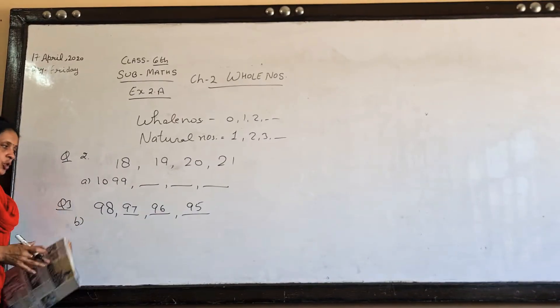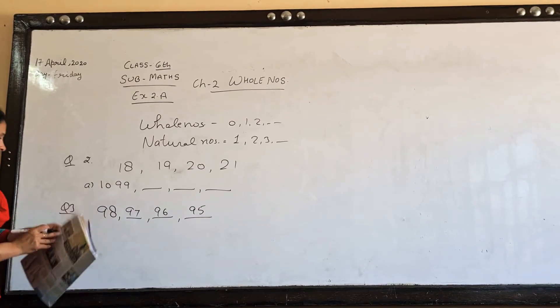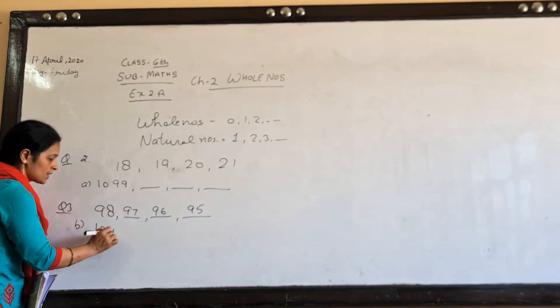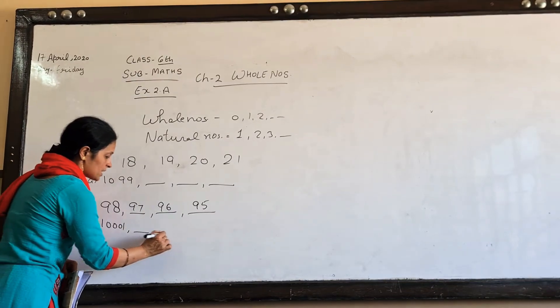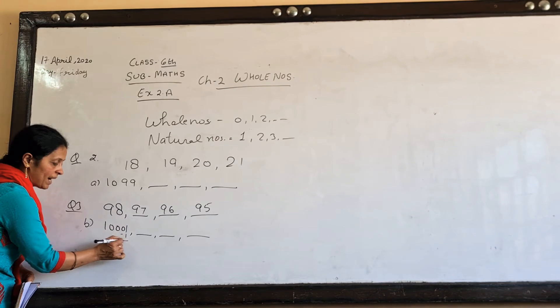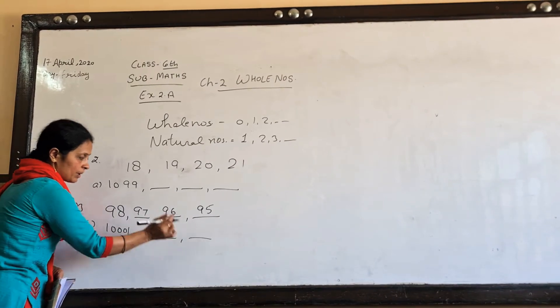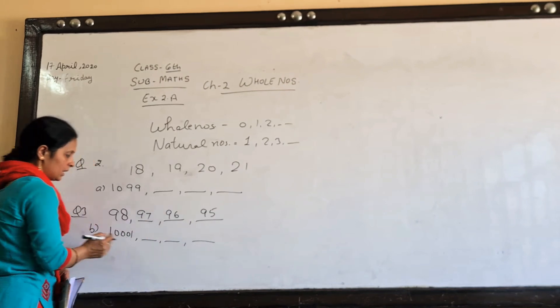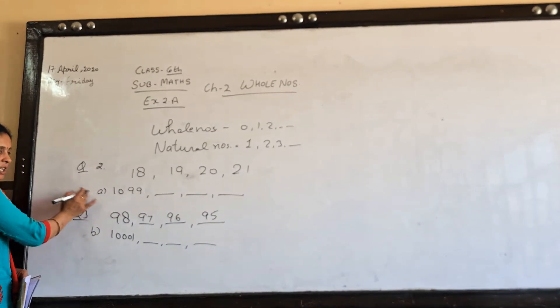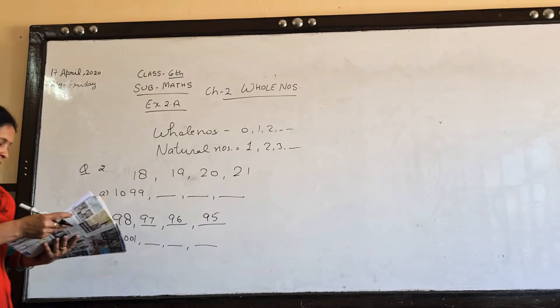Now the question is 1000-1. You have to just find the predecessor. This means you have to subtract 1. Then you have to give three numbers. This is the predecessor.